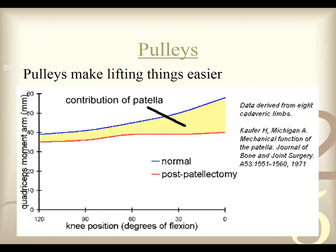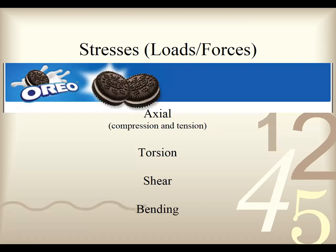Your quadriceps have probably the best mechanical advantage in your body, and the big reason is your patella. Depending on how high your patella is positioned, you have more mechanical advantage — it creates a pulley system. This slide shows the contribution of the patella to the amount of force allowed to be pulled. A patellectomy is when somebody has their patella removed due to degeneration. You can see that a person with a patella has much greater mechanical advantage and pulley abilities versus a person who has had a patellectomy.